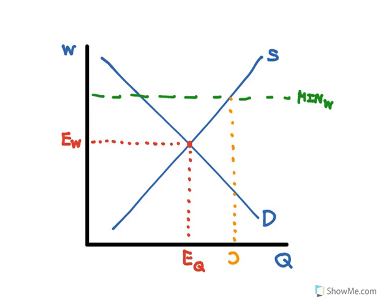So we have a higher quantity supplied of labor, but fewer employers are going to want to hire workers, or they're going to hire fewer workers because the wage rate's higher. And so we have a lower quantity demanded of workers or their labor. And so we see now that the quantity demanded of labor is less than the quantity supplied of labor. So what does that mean?